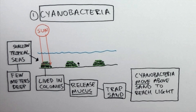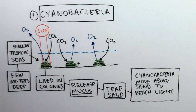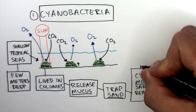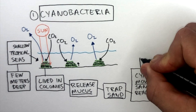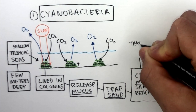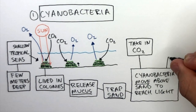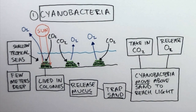As cyanobacteria are photosynthetic organisms, they would take in carbon dioxide from the atmosphere and release oxygen back into the atmosphere. To summarize, cyanobacteria were the first photosynthetic microorganisms to take in carbon dioxide from the atmosphere and to release oxygen back into the atmosphere.